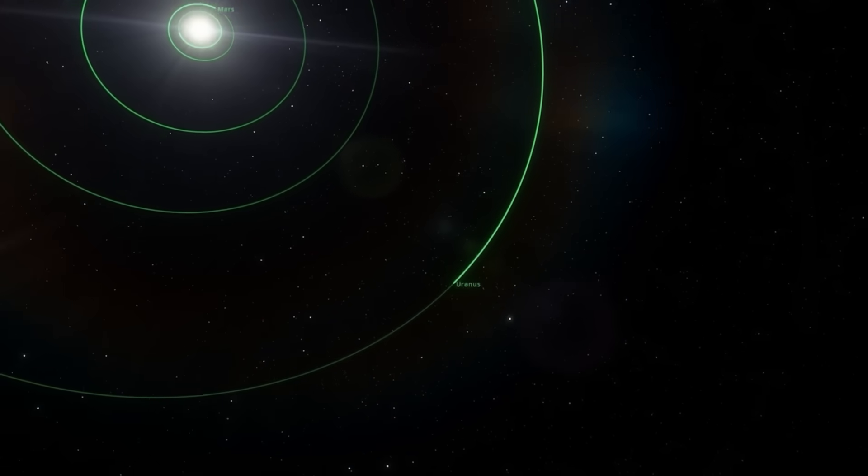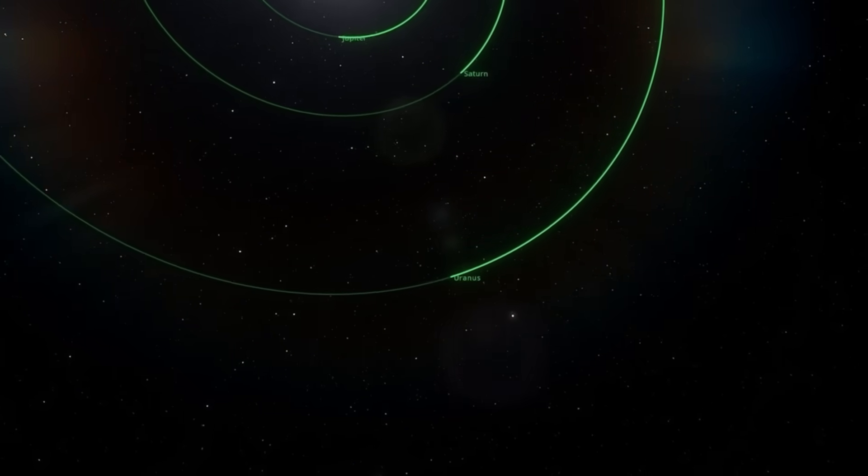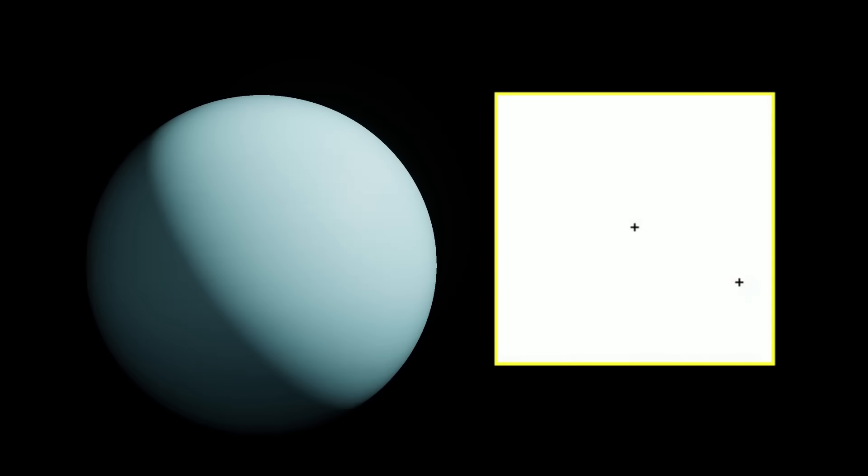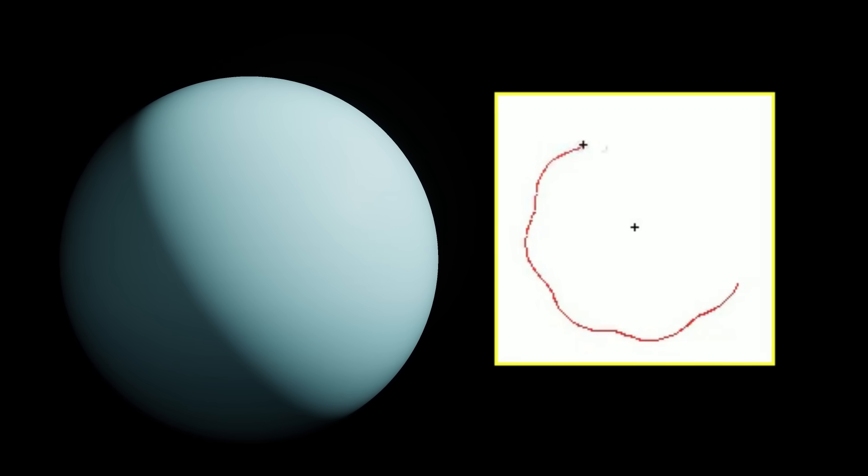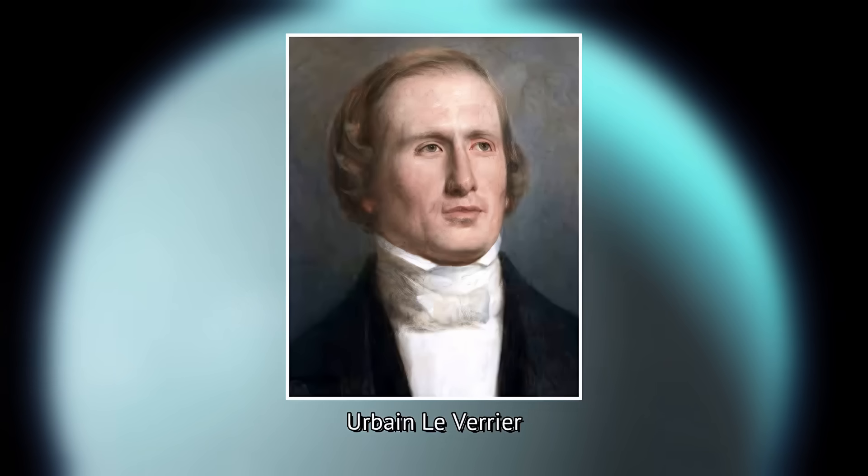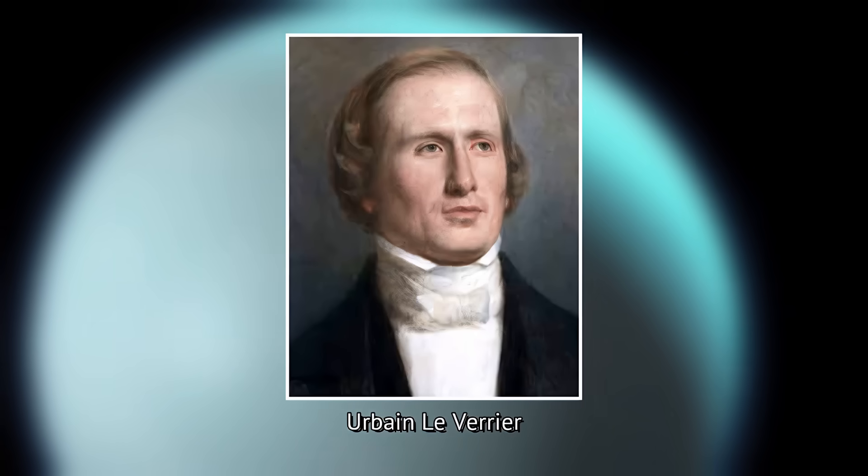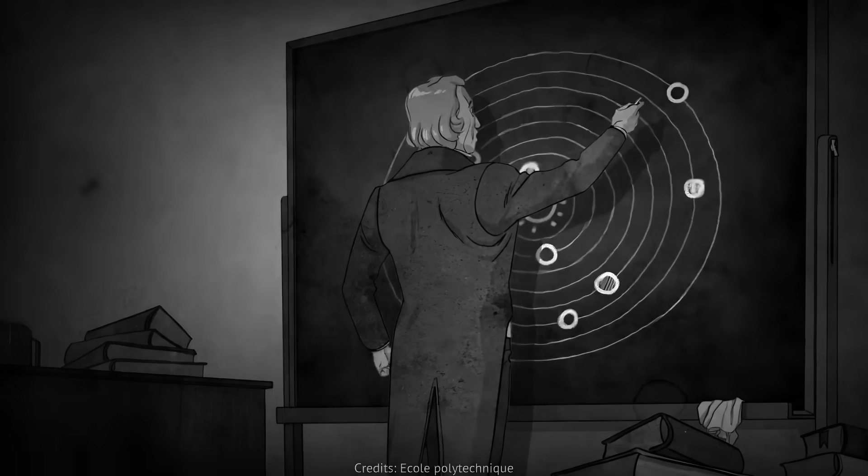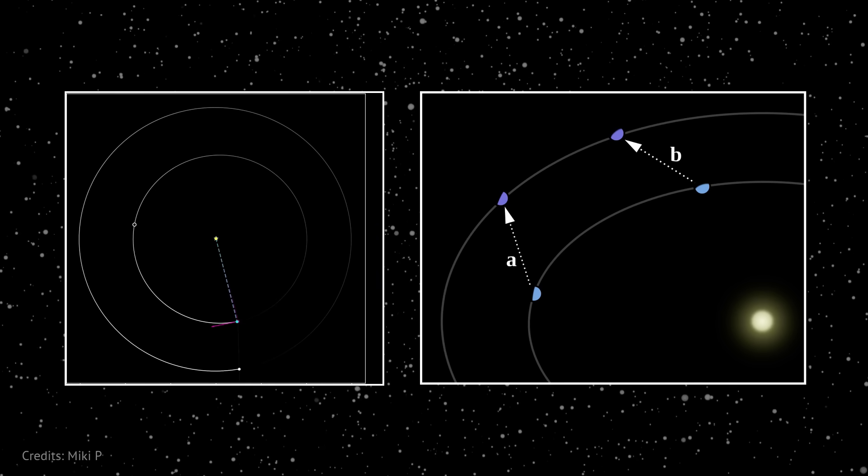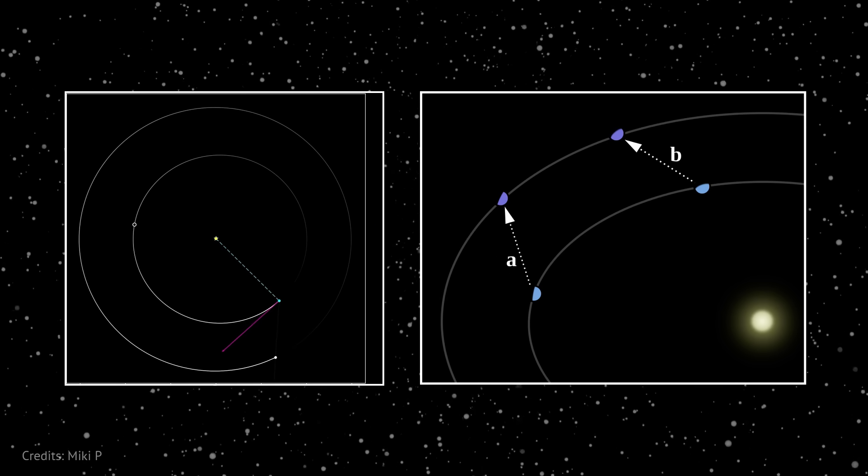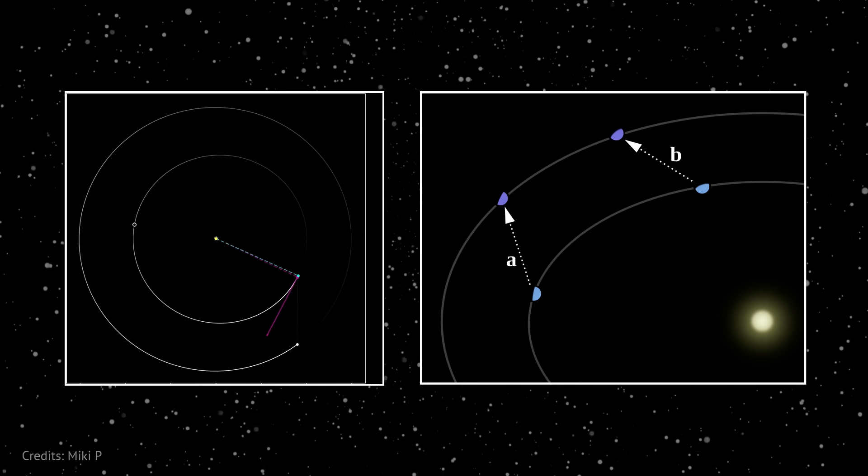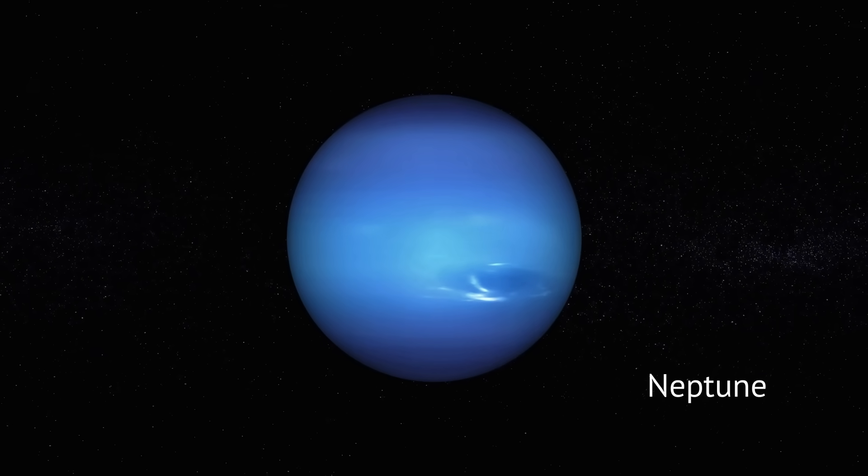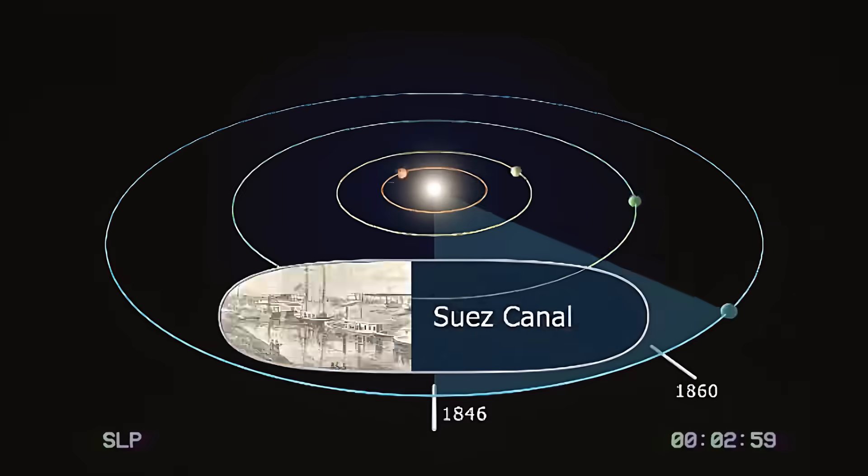But with more observations, astronomers realized Uranus didn't move the way Newton's laws said it should. Its orbit wobbled, just slightly, but enough to raise eyebrows. A French mathematician named Urbain Le Verrier worked it out with pencil and paper and concluded that maybe there was another planet pulling on Uranus. He even calculated where this mystery planet had to be, based entirely on Uranus's strange behavior. And when astronomers pointed their telescopes at that spot in the sky, lo and behold, they found Neptune, right where the math said it would be.